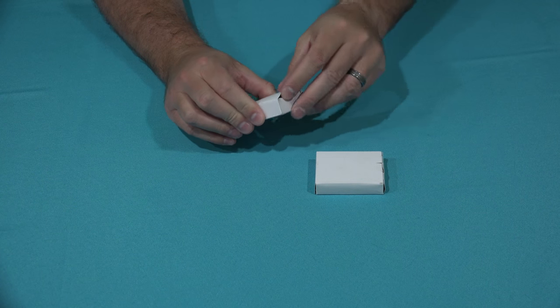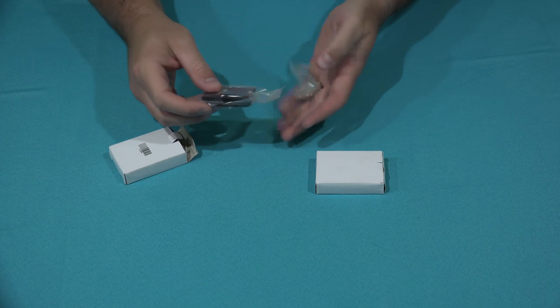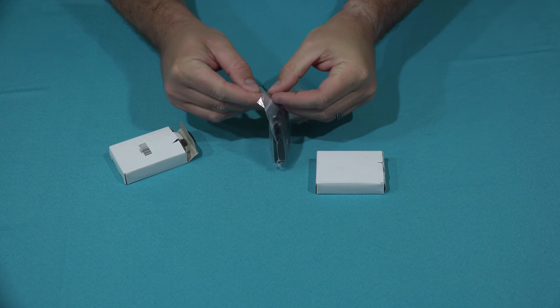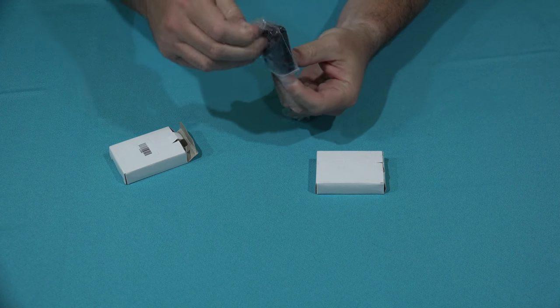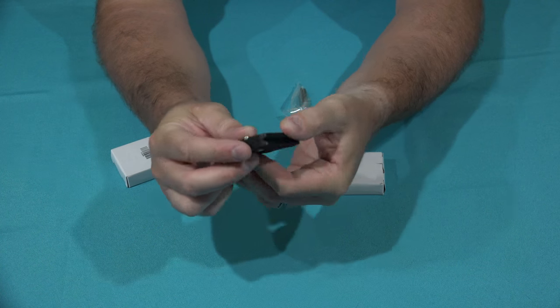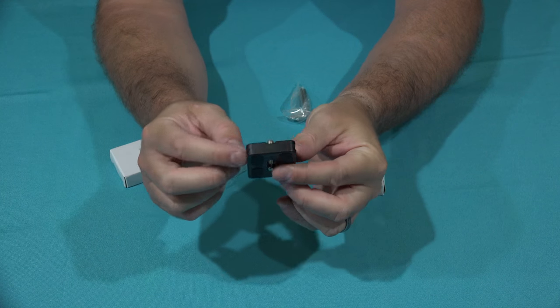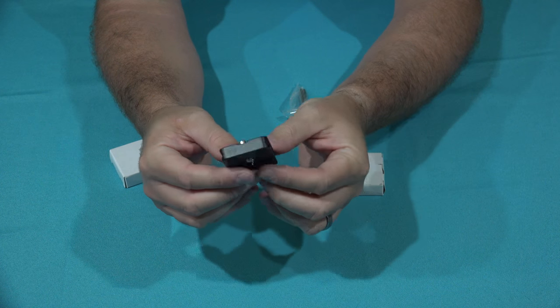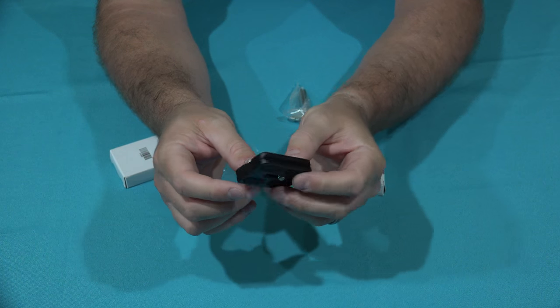So this kit comes with two plates. You can see right there it's got the piece that mounts to the bottom of the camera, and then this piece right here that slides into your MeFoto tripod.